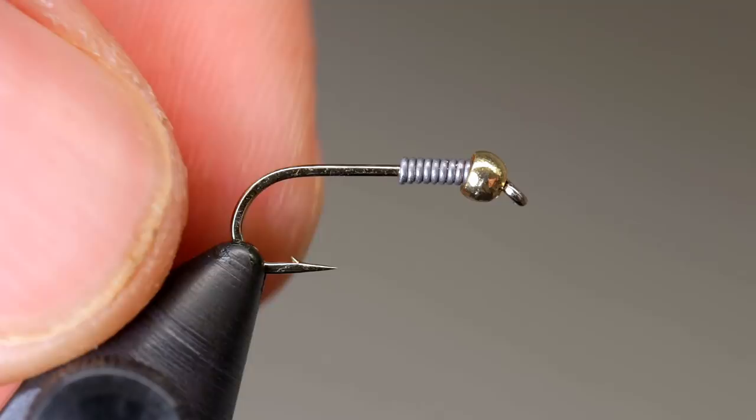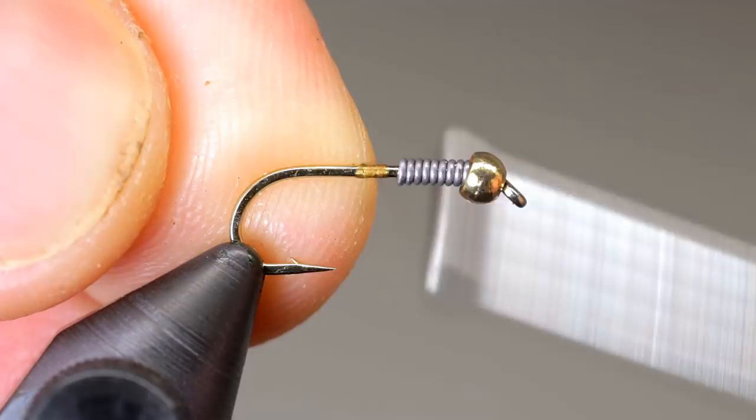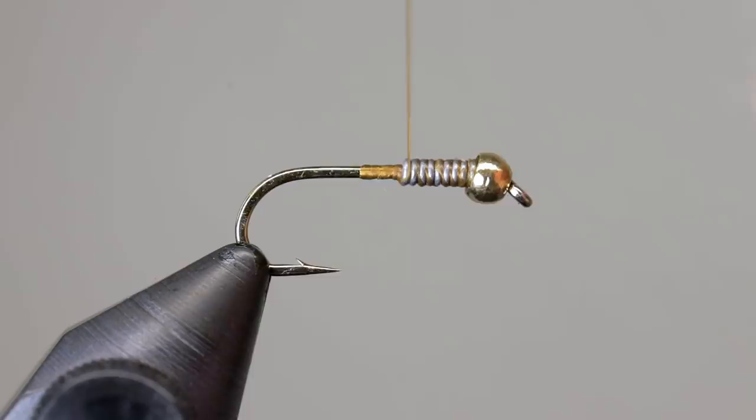To add more weight and to help center the bead, add some lead wire to the fly and push it up into the bead. Begin your thread behind the lead and make a few passes through the wire to secure it in place, then lay down a thread base ending between the hook point and the barb.